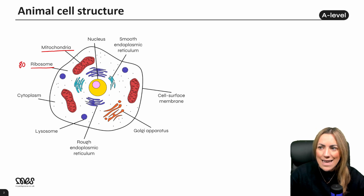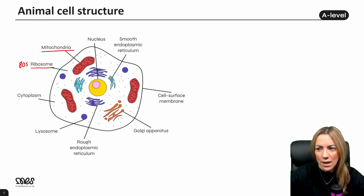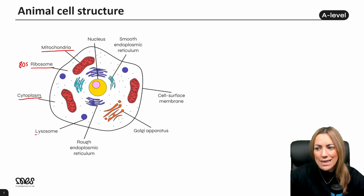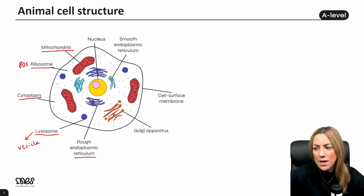These are 80S ribosomes that we find in the cytoplasm and also attached to the rough endoplasmic reticulum. Then we've got the cytoplasm, which fills the cell. We've got some lysosomes — lysosomes are a type of vesicle, specifically vesicles that contain hydrolytic enzymes or digestive enzymes. We've got some rough endoplasmic reticulum. It's called rough because it has ribosomes attached to its surface. These are 80S ribosomes, so it looks rough under the microscope.